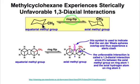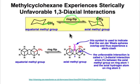The ring-flipping process takes the methyl group in an equatorial position and transposes it into an axial position. All of those dozens of other conformations that we found are intermediates along the minimum energy pathway of this ring-flipping process.